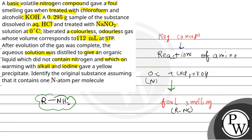So, what is our final answer? The original substance is CH₃-CH(NH₂)-CH₃ — isopropylamine. This is our final answer. The final structure of the compound is isopropylamine. I hope you understood it well. Best of luck.